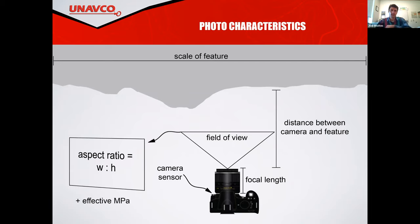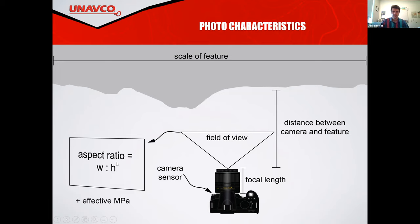Just some characteristics of cameras and pictures: the focal length refers to basically the length of the lens. Telephoto lenses have longer focal lengths; wide-angle lenses have shorter focal lengths, which influences the field of view — the angle that you capture. The aspect ratio is simply the length-to-width ratio. They're typically anywhere from 16:9, which is the wide screen we have on our computers these days, down to 3:4, which is the typical old-school TV view.